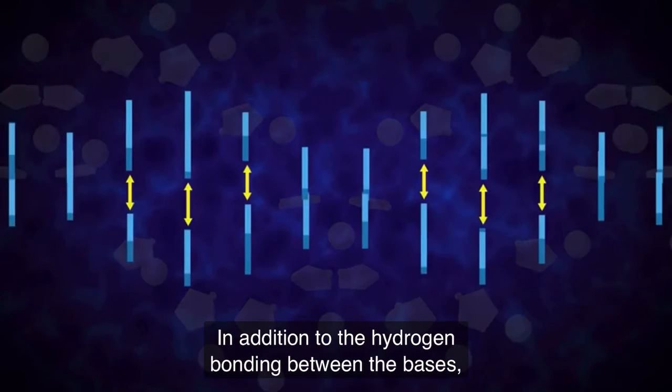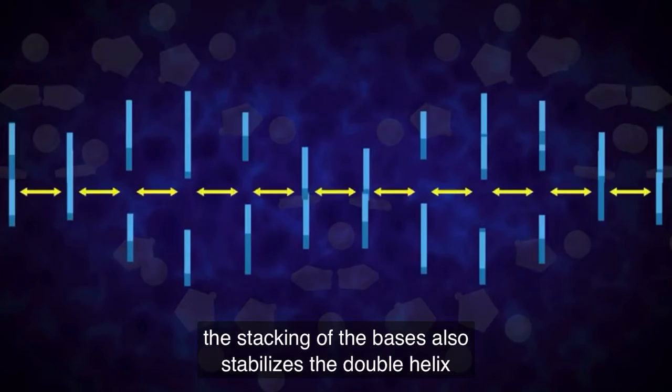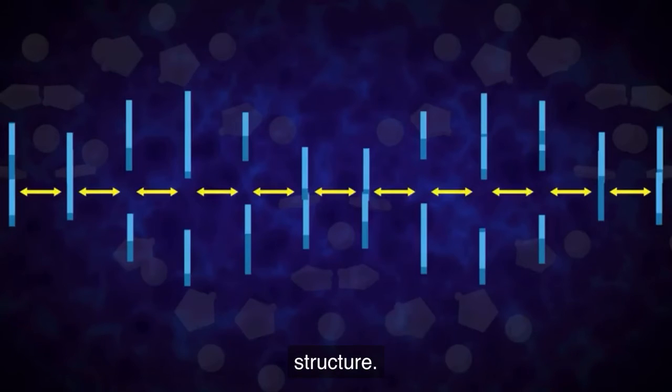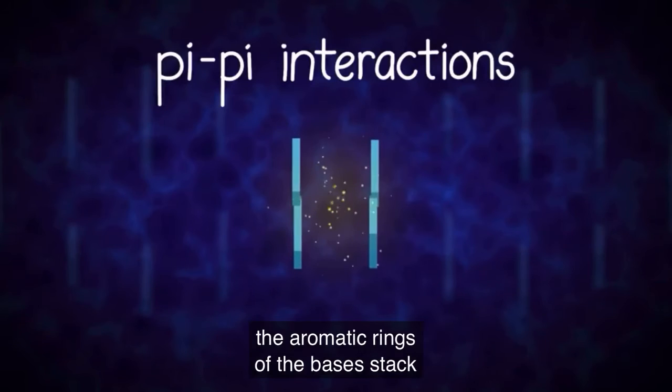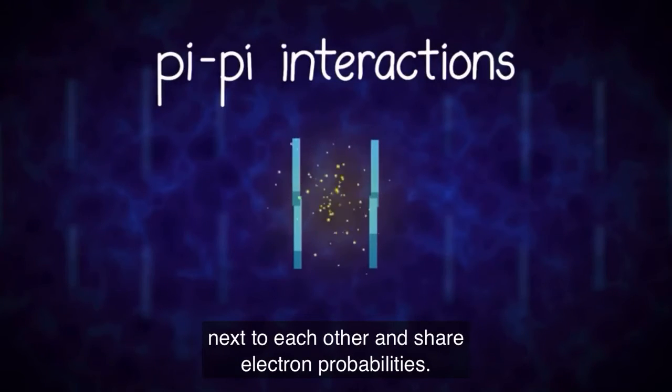In addition to the hydrogen bonding between the bases, the stacking of the bases also stabilizes the double helix structure. These pi-pi interactions form when the aromatic rings of the bases stack next to each other and share electron probabilities.